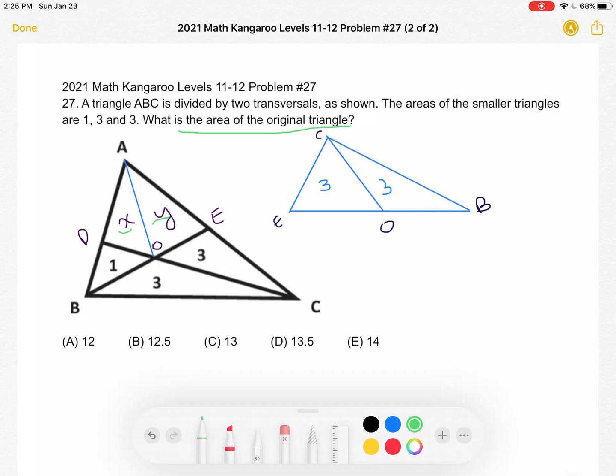So in order to figure out how we can find X and Y, let's take a look at this triangle BEC, which I've drawn over here not exactly to scale, and try to figure out what the areas tell us about the lengths of the triangle. So we have this triangle CEO has an area of 3, and the other triangle COB also has an area of 3.